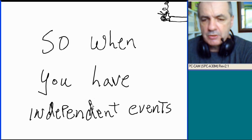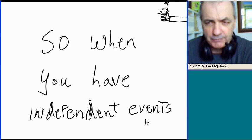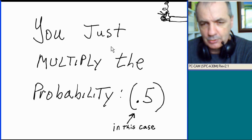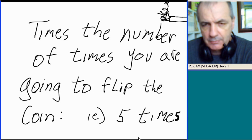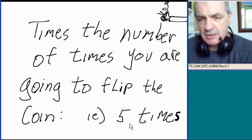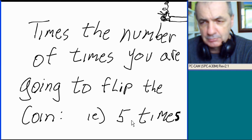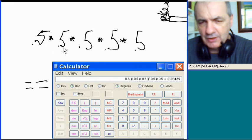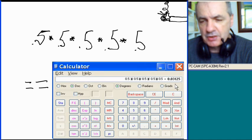Another way to write 0.5 times 0.5 times 0.5 is 0.5 to the third power. So when you have independent events like the flipping of a coin, you multiply the probability — which is 0.5 in this case — by the number of times you flip the coin. Let's do five times now. So 0.5 to the fifth power gives us 0.5 times 0.5 times 0.5 times 0.5 times 0.5, which equals 0.03125. I did it on the calculator — you can check it for verification.